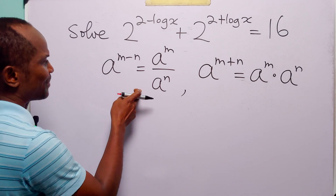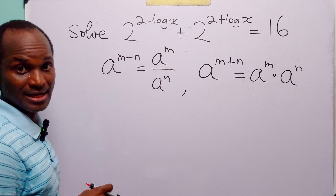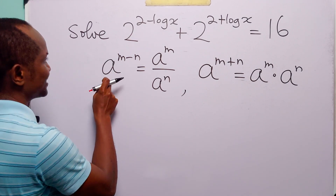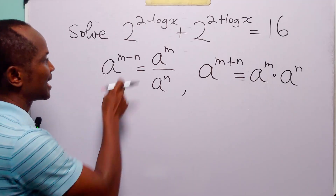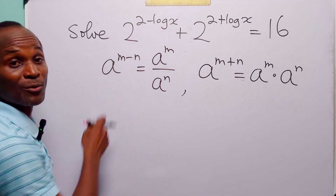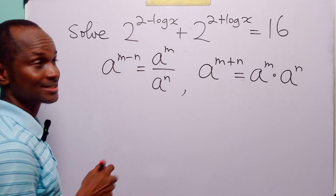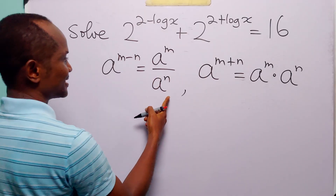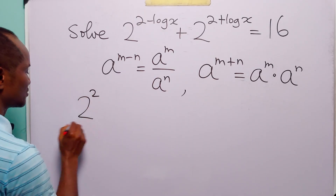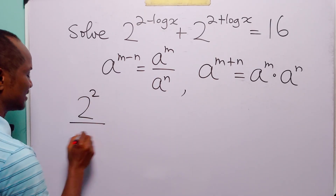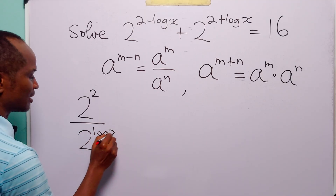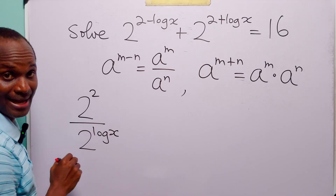When we apply the first law to the first term, it's obvious that a is equal to 2, m is equal to 2, and n is equal to log x. So we can write this as 2 squared divided by 2 to the power log x.